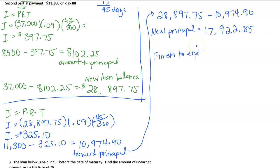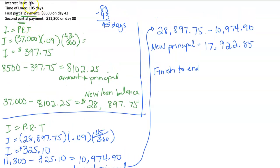Okay. We don't have any more partial payments, but we do have to go all the way to the end of the one hundred and five days. So our I equals PRT. The principal is our new $17,922.85. Our rate this whole time has been 9%. And now let's calculate how many days to the end. We were on day 88.